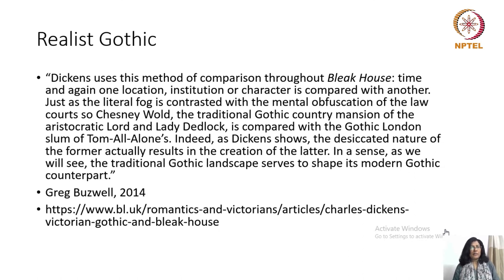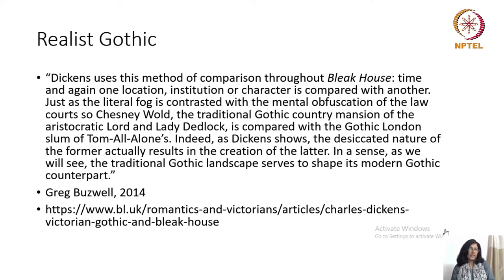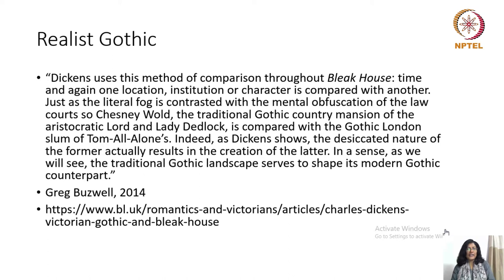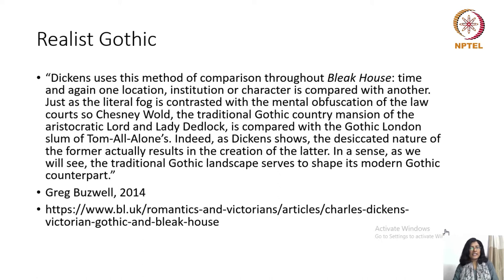Dickens uses this method of comparison throughout Bleak House. Time and again, one location, institution, or character is compared with another. Just as the little fog is contrasted with the mental obfuscation of the law codes, so Chesney Wold — the traditional Gothic country mansion of the aristocratic Lord and Lady Deadlock — is compared with the Gothic slum of Tom All Allones. As Dickens shows, the desiccated nature of the former actually results in the creation of the latter. The traditional Gothic landscape serves to shape its modern Gothic counterpart.